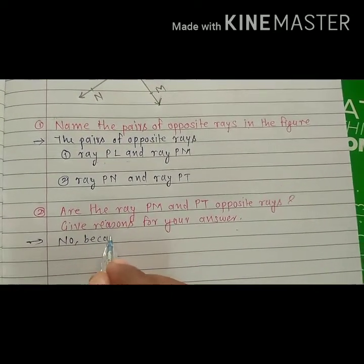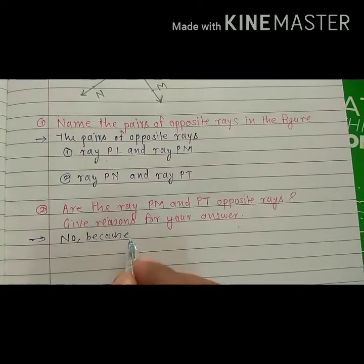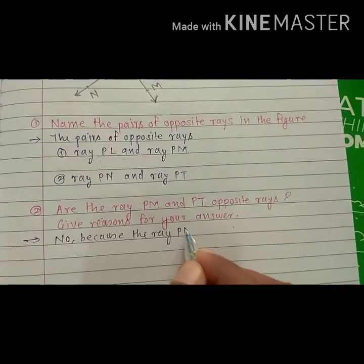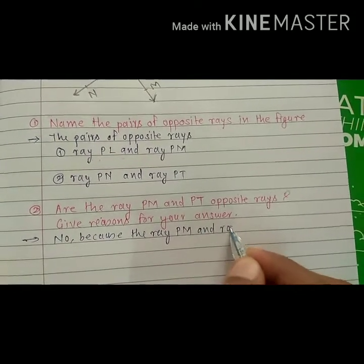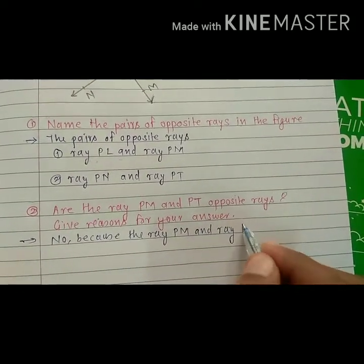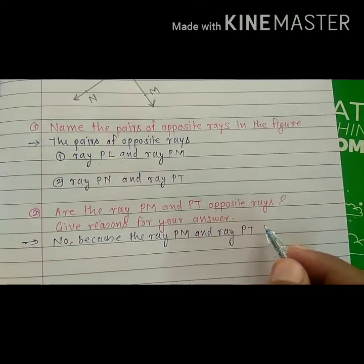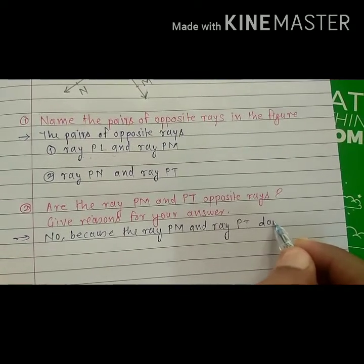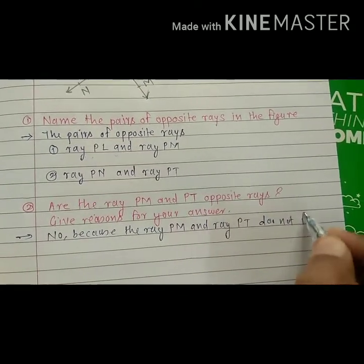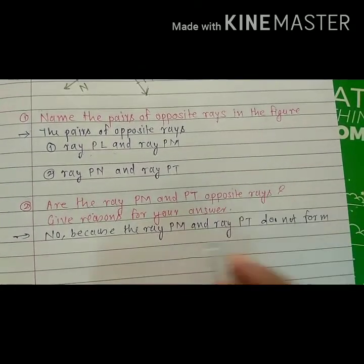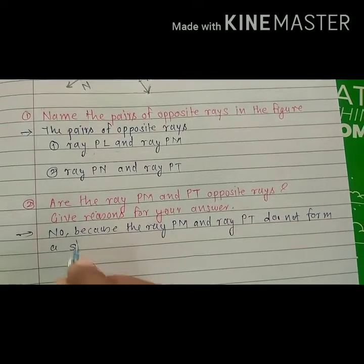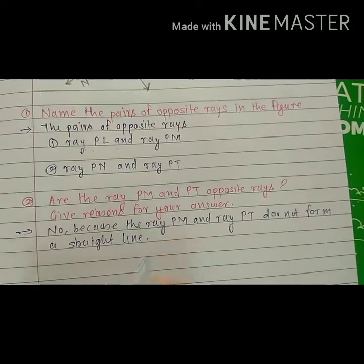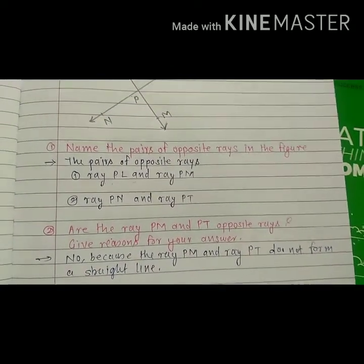Because ray PM and ray PT do not form a straight line, they are not opposite rays.